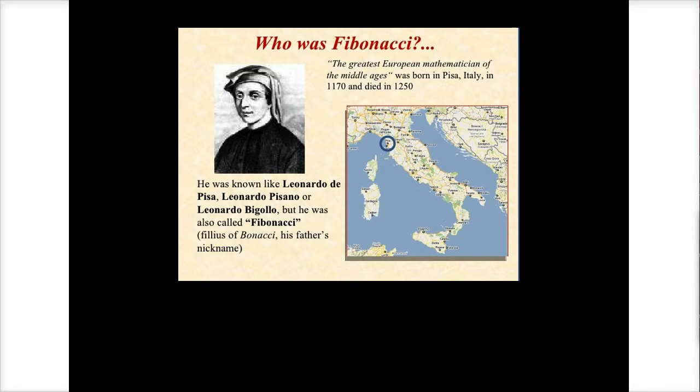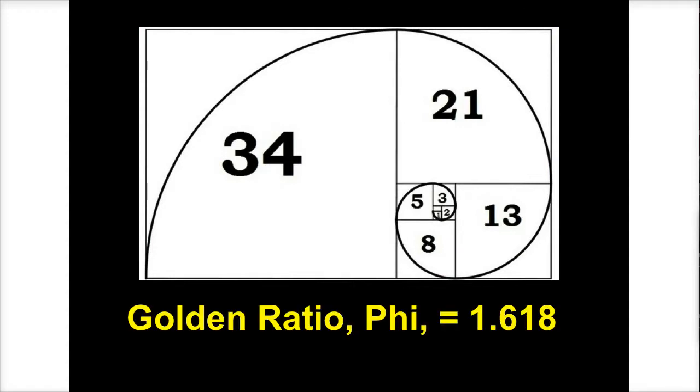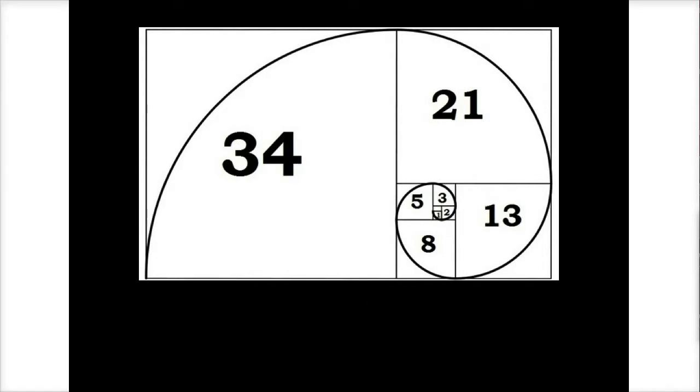So surprisingly, it turns out that there is an incredible link between the Fibonacci sequence and the golden number, Phi, which is found throughout nature. And the golden number is 1.618 roughly.